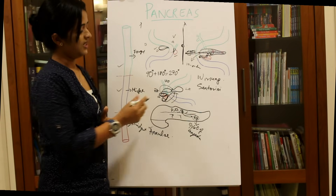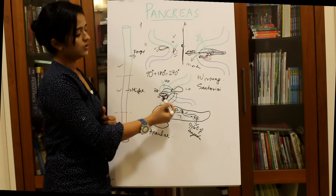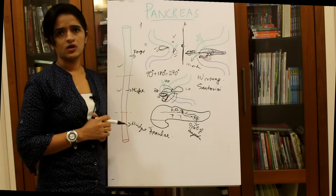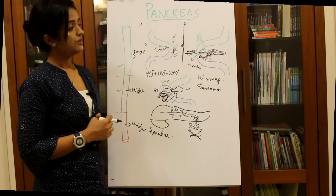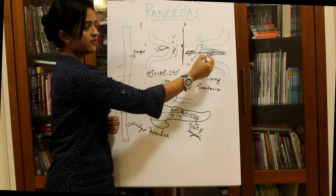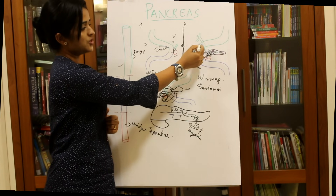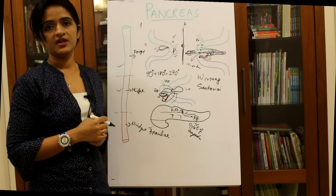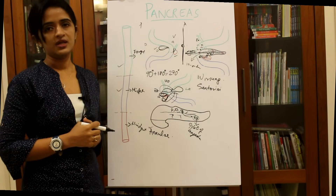When the ventral bud remains as a bilobed mass and tries to fuse with the dorsal pancreatic bud, one bud goes anterior to the duodenum and the other goes posterior, encircling and obstructing its lumen — this is annular pancreas. Additionally, accessory pancreatic tissue can be found in the walls of the duodenum, in the gallbladder, or incorporated in Meckel's diverticulum, instead of aggregating with the major pancreatic tissue.